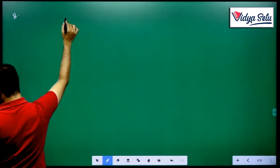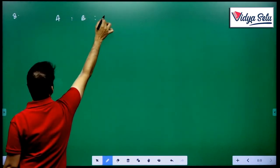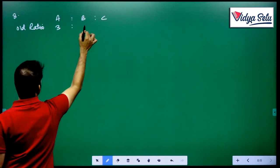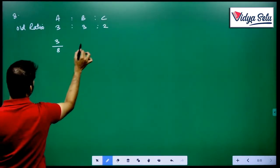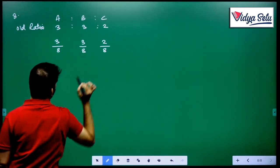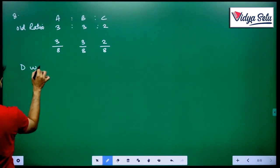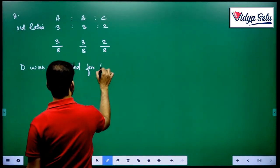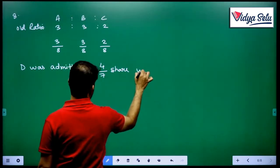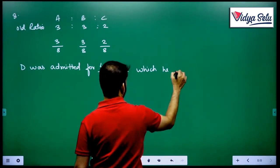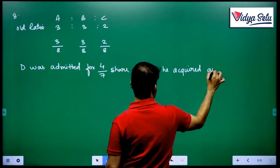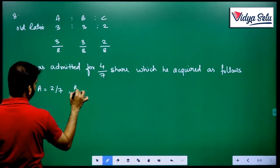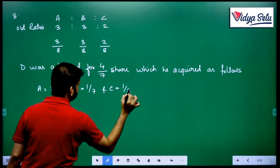The partners were A, B and C. Old ratio was 3 to 3 to 2. Who was admitted? D was admitted, for how much share? 4/7 share. Which he acquired from A, 2/7, B, 1/7 and C, 1/7.